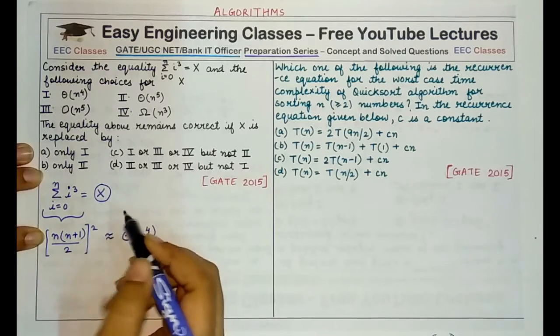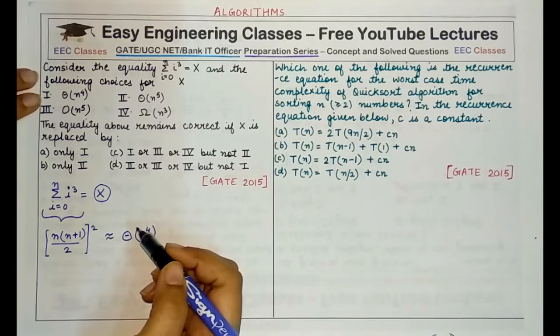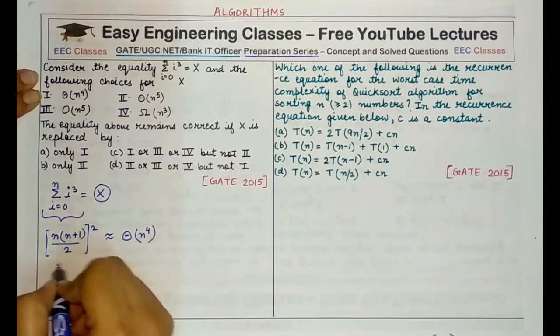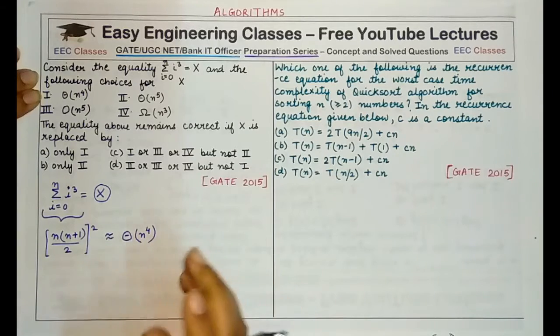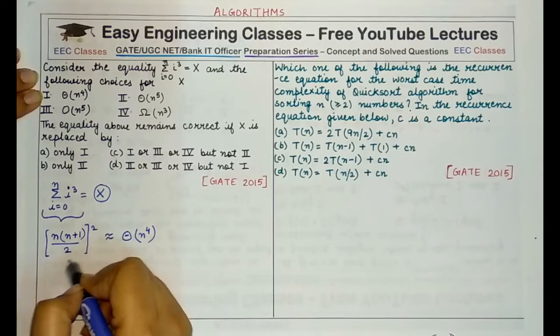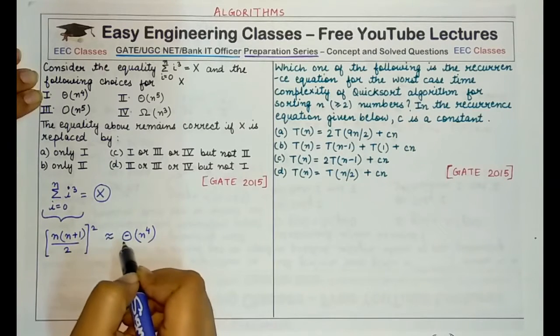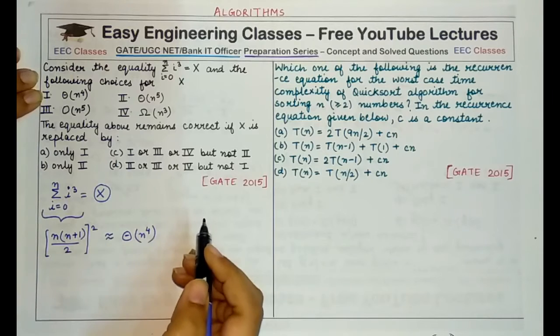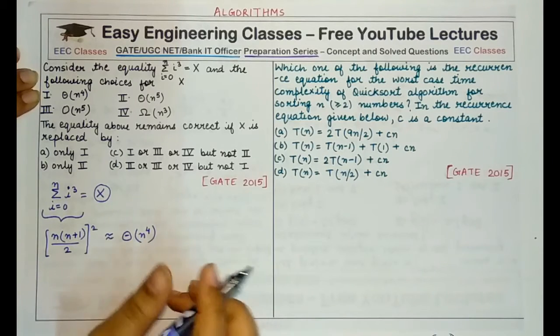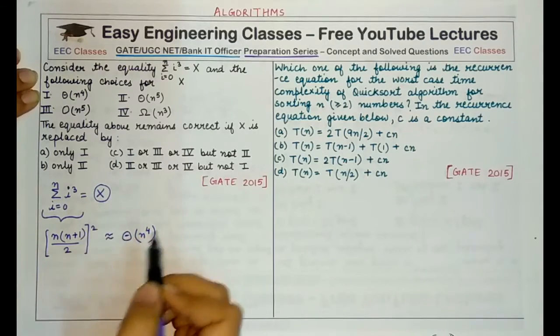First of all, first option would definitely be present because this is the exact bound or the tightest bound that we can have on this inequality or this expression whose bound is theta of n raised to power 4. So first option is definitely it can be a choice for replacing x.